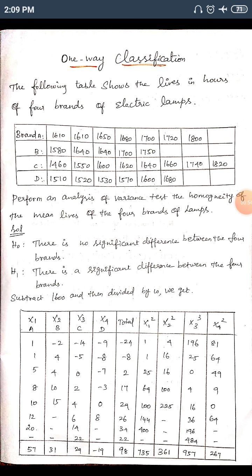First, we state the hypothesis. H0: there is no significant difference between the four brands of lamp. H1: there is a significant difference between the four brands of lamp. Since it is a one-way classification, we are discussing only row-wise data for the four brands.